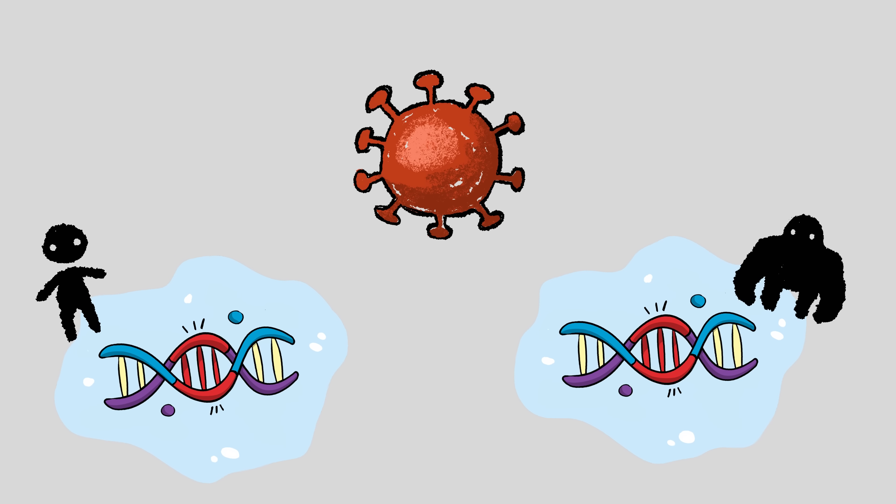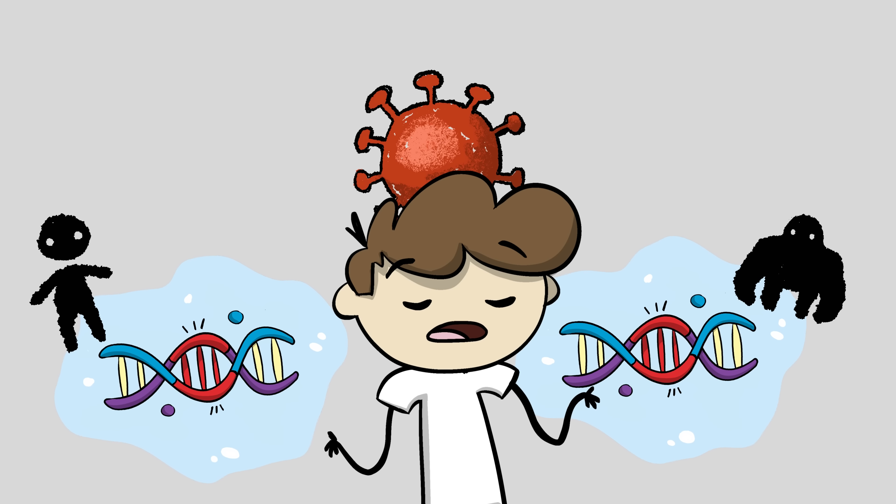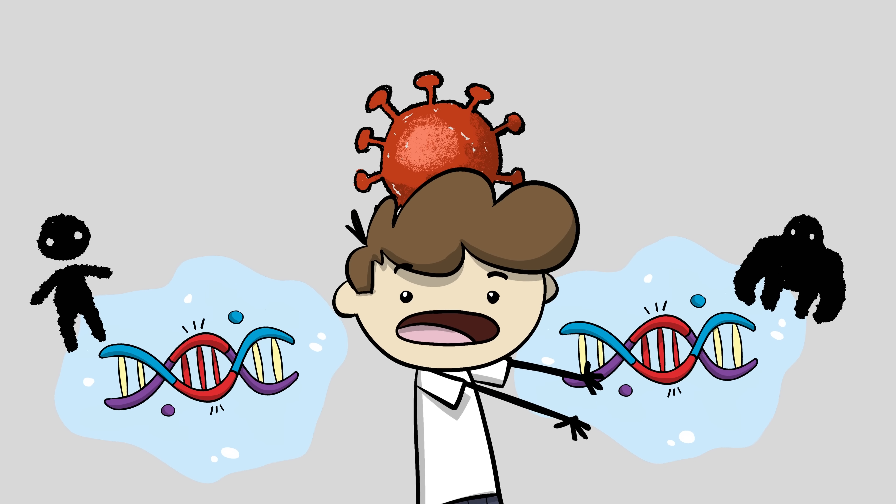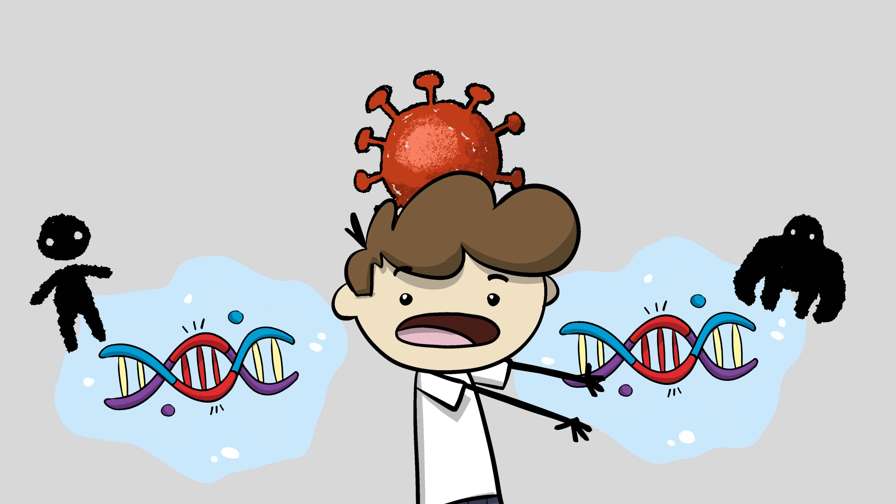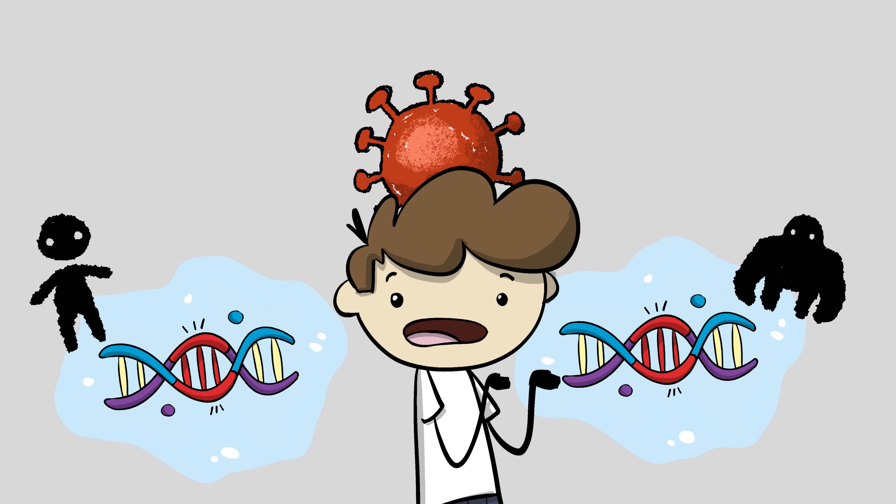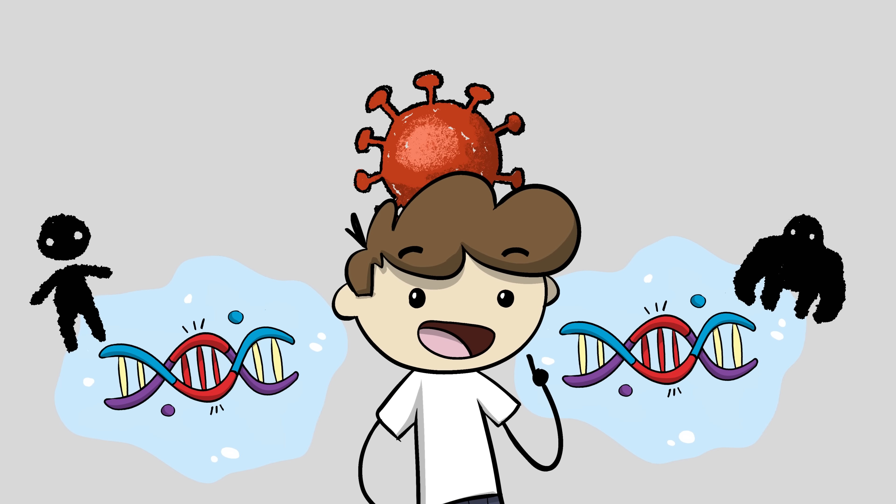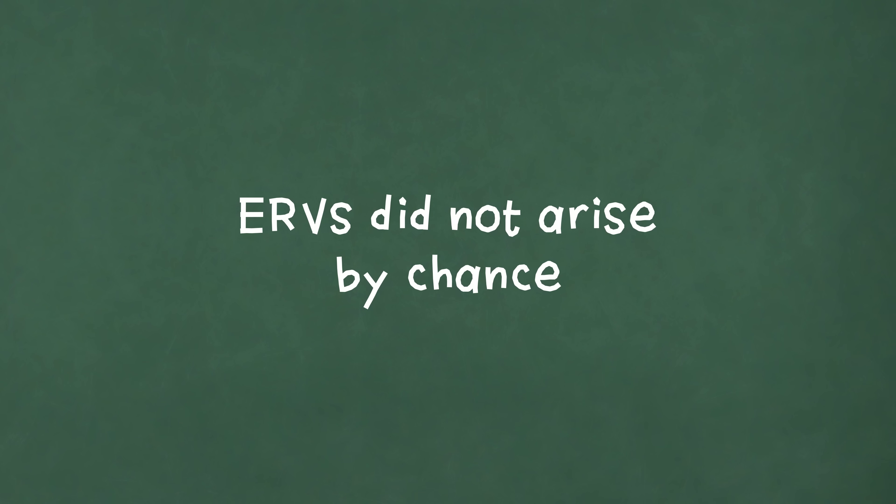These are claimed to be ancient viruses that infected some common ancestor of both apes and humans because now they're found in exactly the same spot of DNA in both. And, as the argument goes, the likelihood of these viruses being inserted by chance into the same place in the genomes of different species is very low. So, common descent is the better explanation.